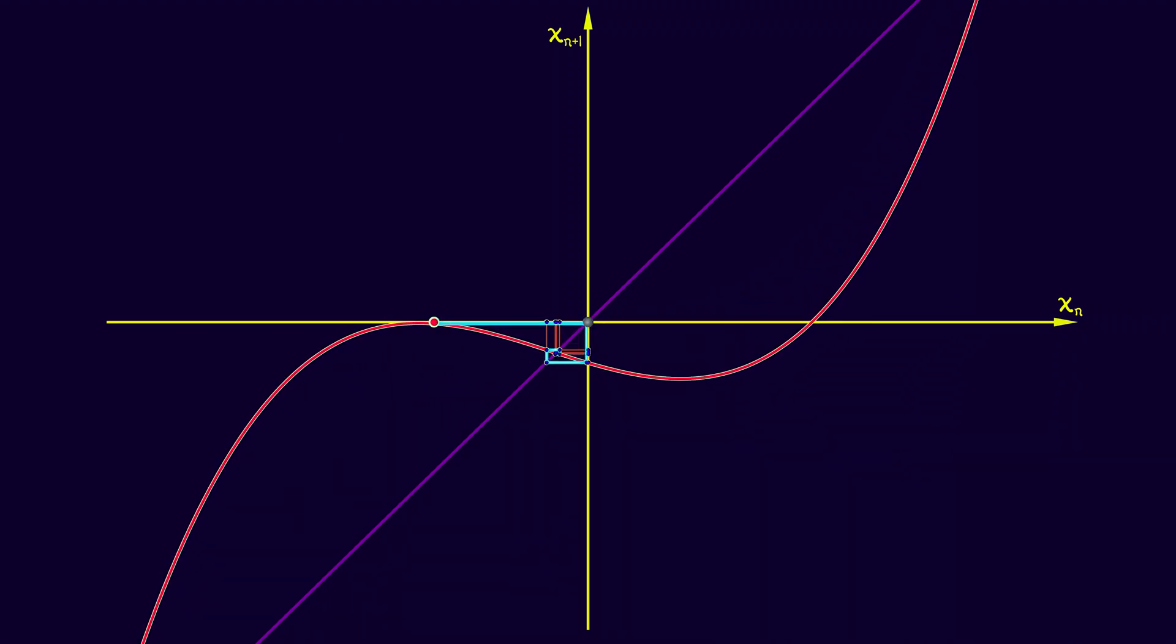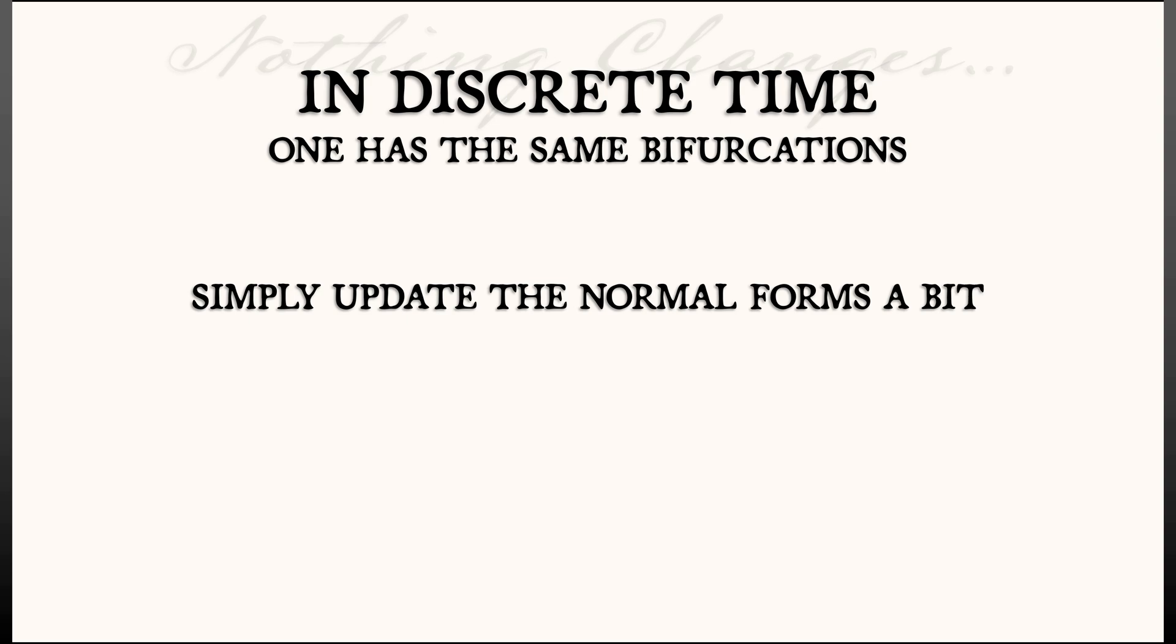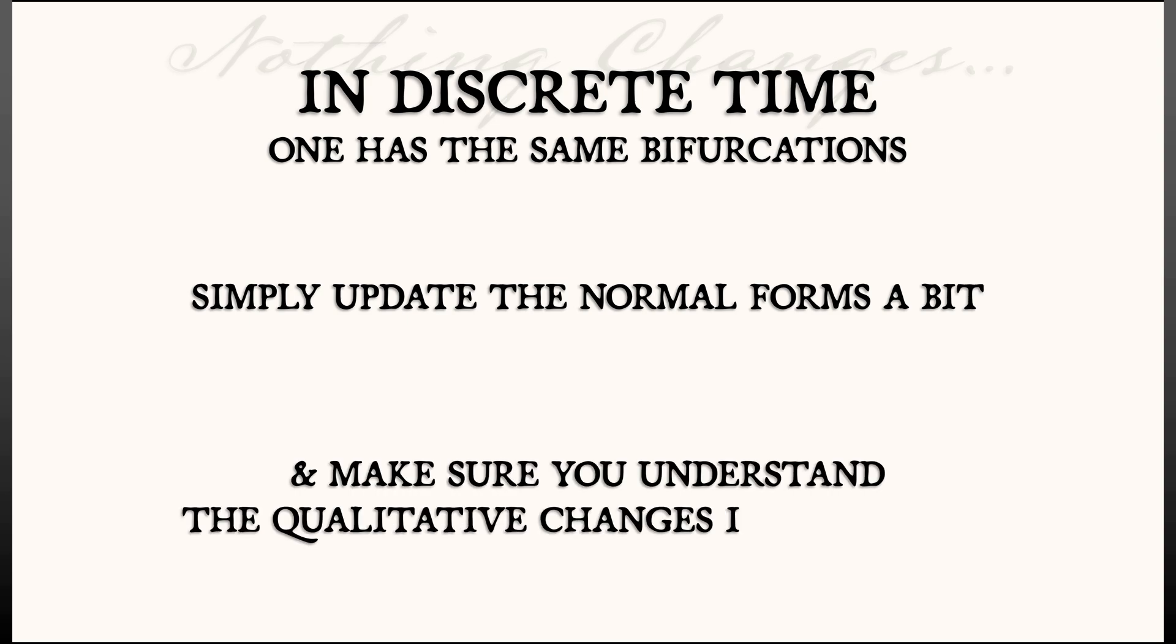So in summary, if you're working in discrete time, you've got the same bifurcations that you have in continuous time, at least as far as what we have seen so far. Remembering the normal forms is very simple if you know them in continuous time. Make sure you understand this in terms of the qualitative changes that are happening in behavior, and you'll be fine.